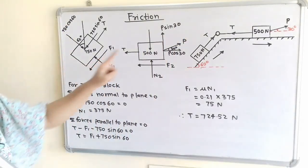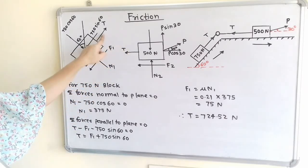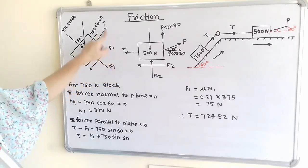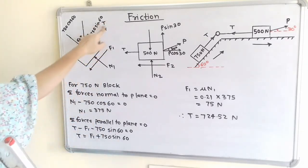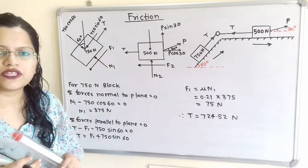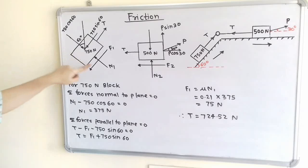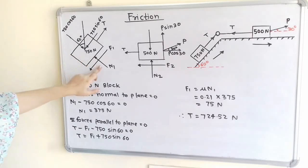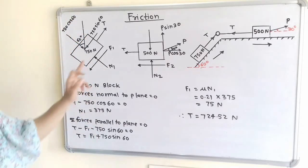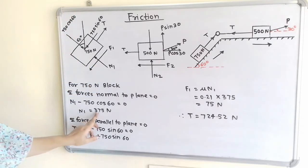The value of T is the same for both blocks. We will first solve the 750 N block to find the value of T, then use this value in the 500 N block to calculate P. Considering the 750 N block, the summation of forces normal to the plane equals zero, so N1 equals 750 cos 60, which equals 375 N.